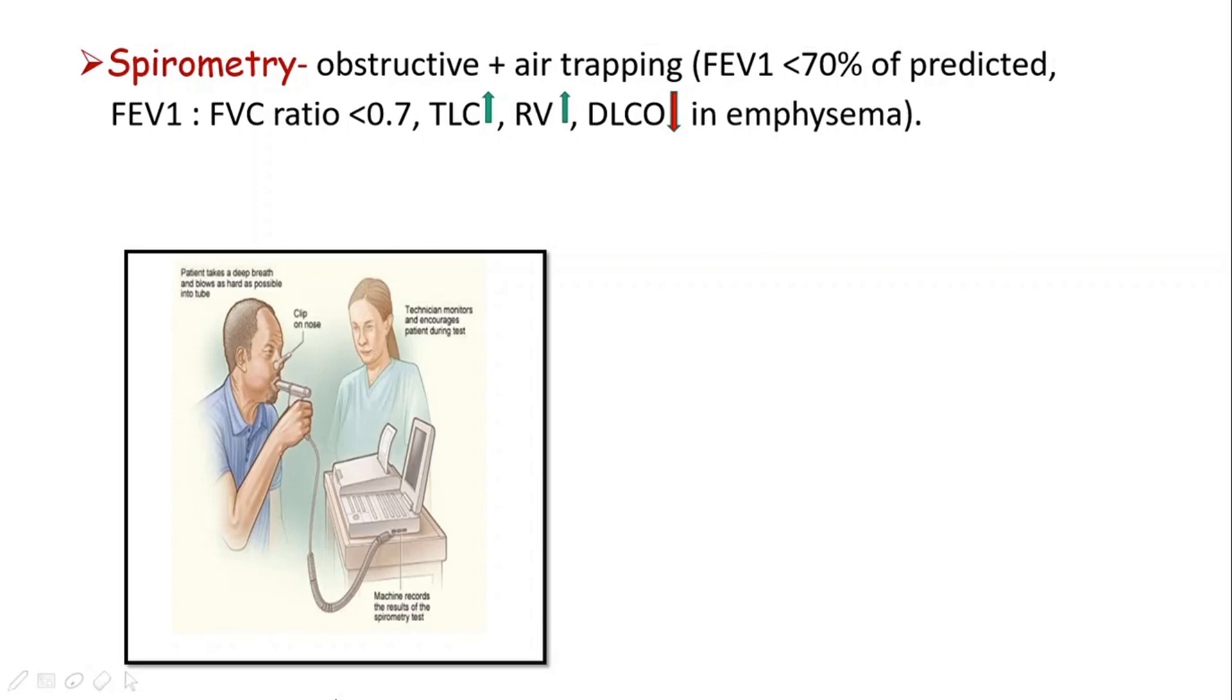And as the definition we learned, the forced expiratory volume or the amount of air the patient is able to expire in the first second is compared with respect to the forced vital capacity, which is the amount of air the patient can exhale during the full expiration. The ratio is often less than 0.7, and other values like the total lung capacity and residual volume is increased.